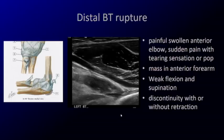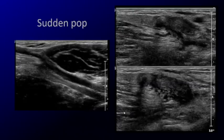Here's a patient who presented with a tearing sensation at the gym. As you follow the biceps tendon down, there's a hypoechoic defect or fluid in the tendon, and the tendon is no longer attaching into the radial tuberosity. Many times it may not completely retract as expected, but when it does, it's much easier to diagnose.